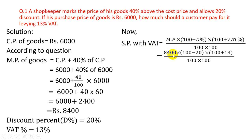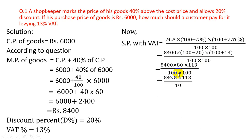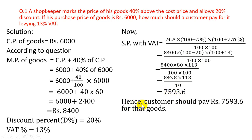So SP with VAT = 8400 × (100 − 20) × (100 + 13) ÷ (100 × 100) = 8400 × 80 × 113 ÷ 10000. After cancellation, this equals Rs.7593.6. Hence the customer should pay Rs.7593.6 for those goods.